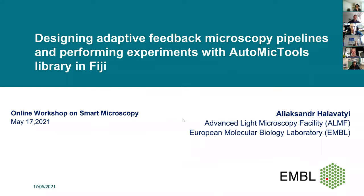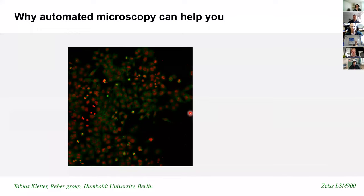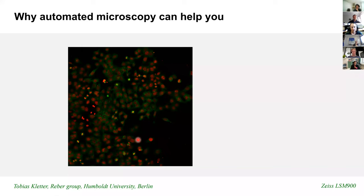Let's start with a very basic — by now almost textbook — example. We have a large field of view and we are interested in a particular phenotype. In this case we have a cell culture with live cells and we are interested to identify mitotic cells or cells in metaphase and image them at high resolution. We have to be very quick and very precise.